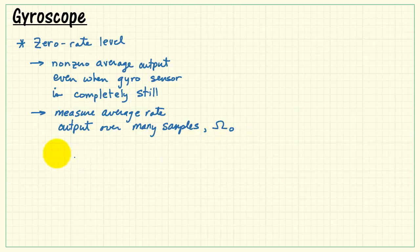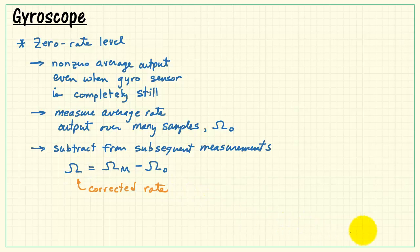To deal with this, you can measure the average rate output over many samples, and I'll call that omega sub-zero. You then subtract that value from subsequent measurements. Therefore, the corrected rate is the measured rate minus the zero rate level.